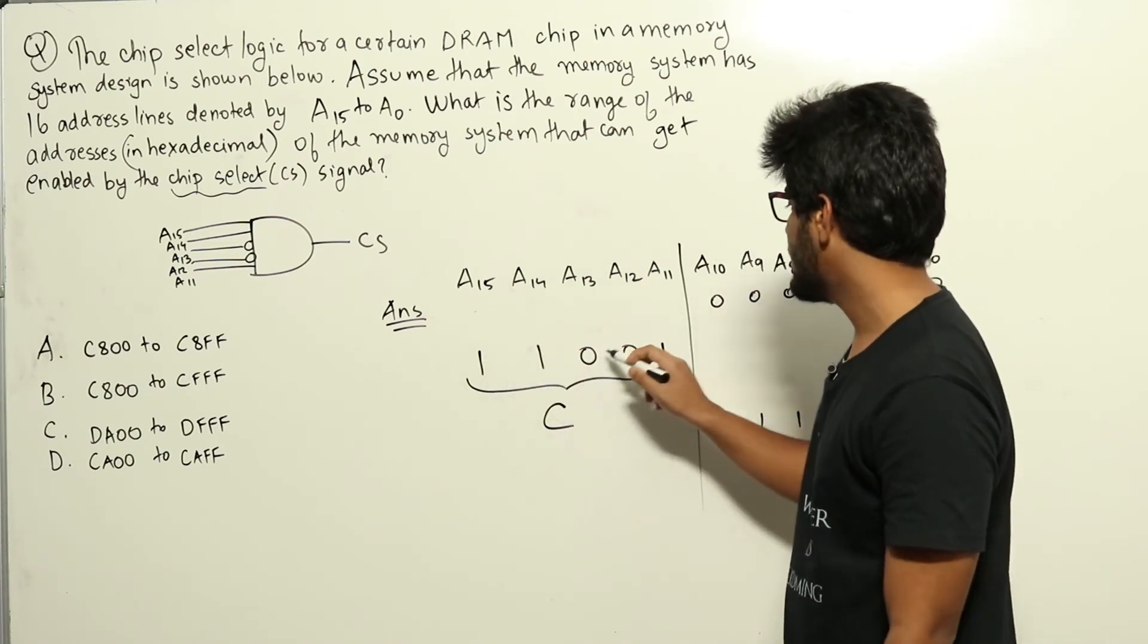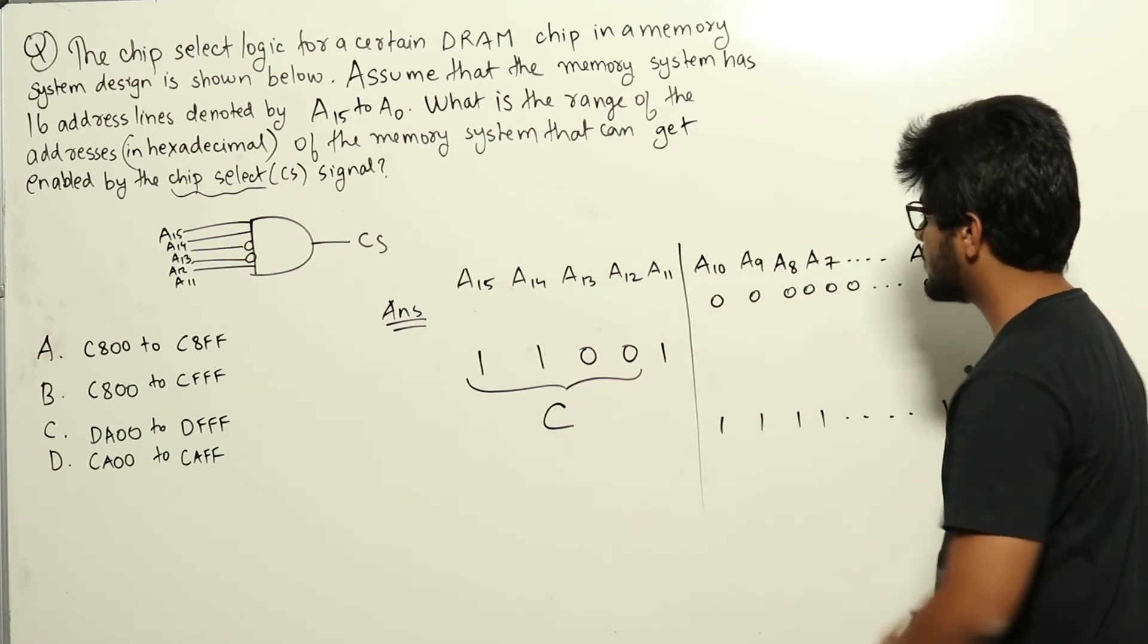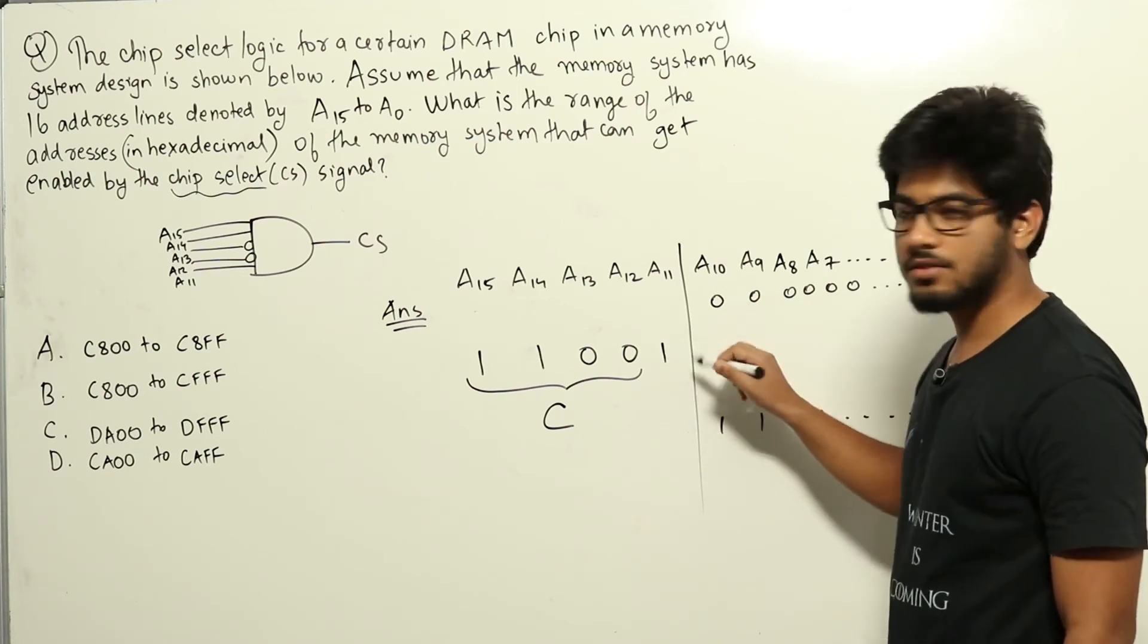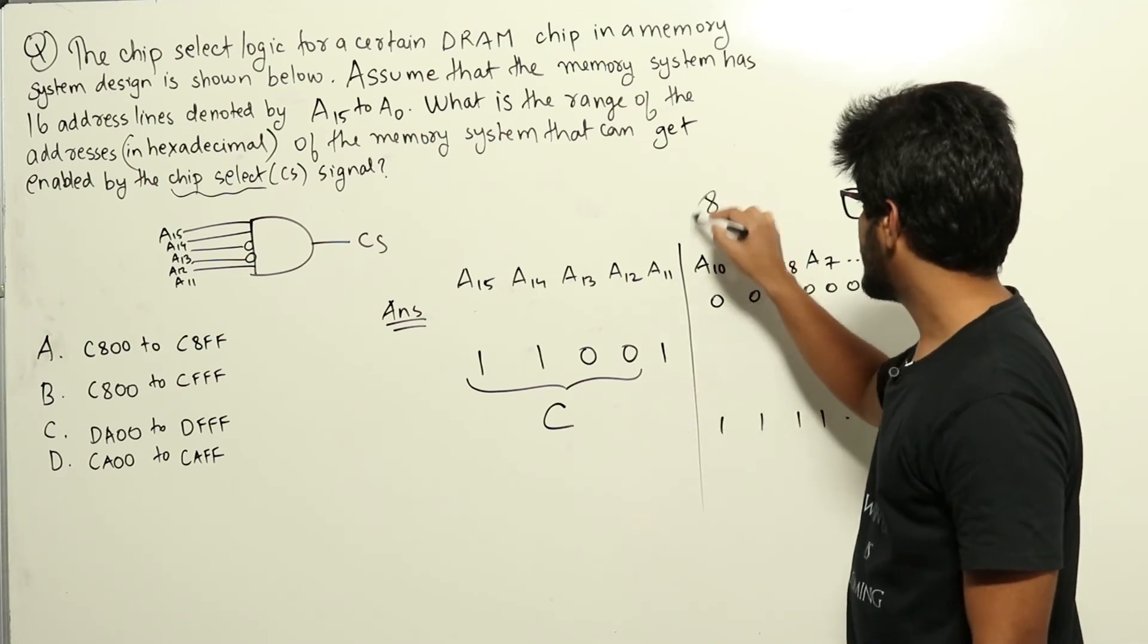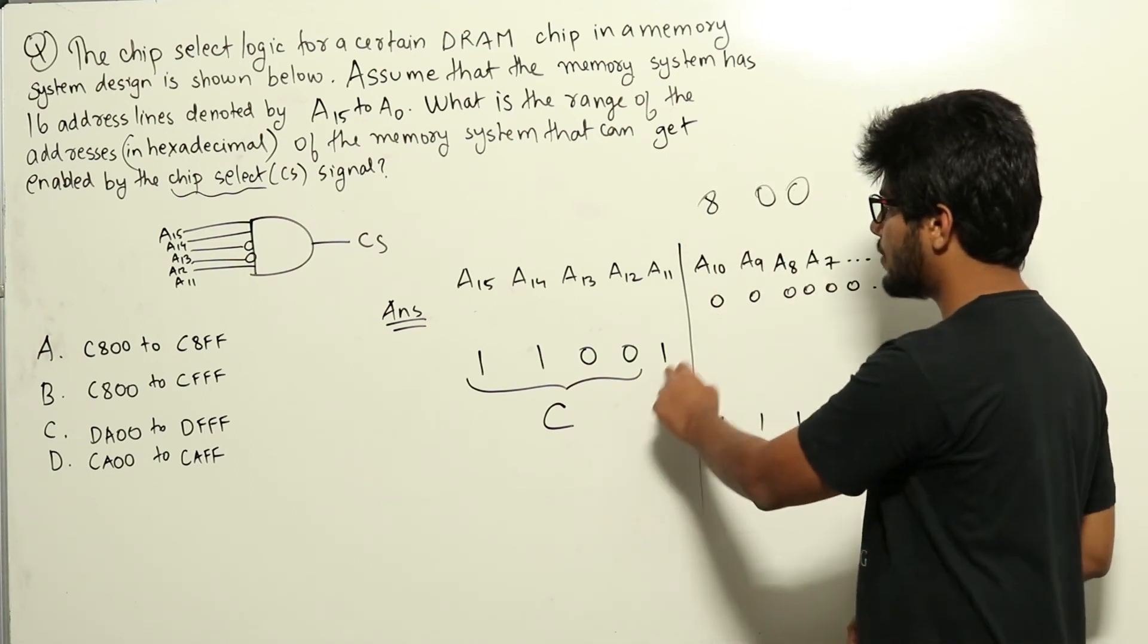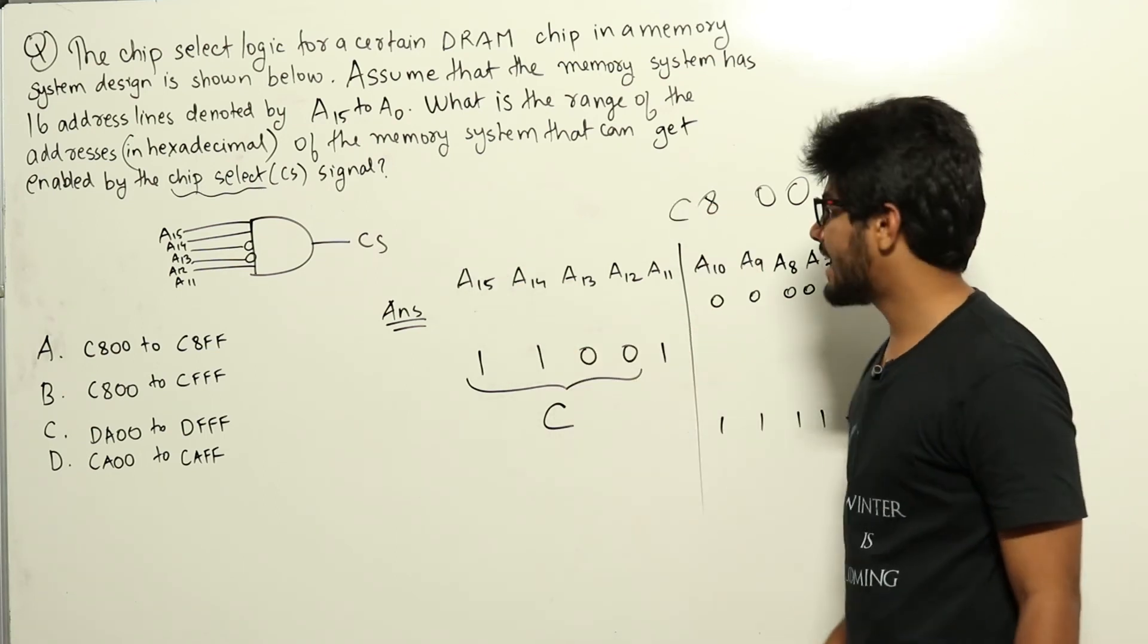Initially it is 1100, that will be C. When A10 to A0 is all zeros, the next digit will be 1000, which is 8. After that, all zeros will be 00 only. So this is the lowest address for which the CS signal will be active: C800.